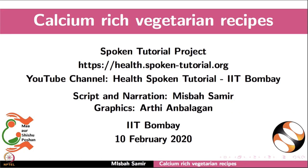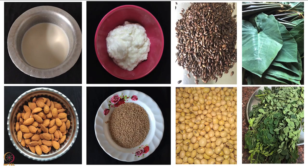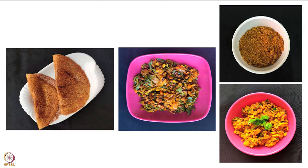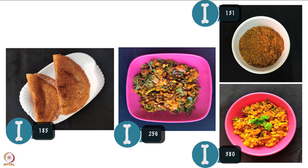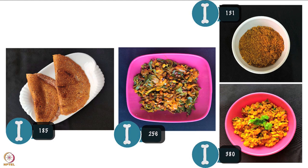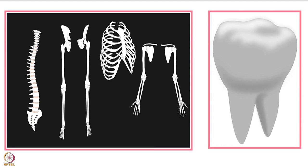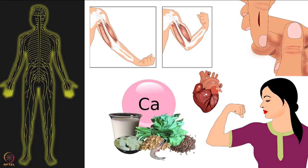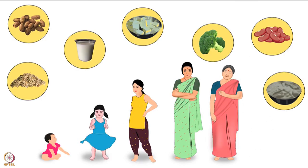Welcome to the spoken tutorial on calcium-rich vegetarian recipes. In this tutorial we will learn about food sources of calcium, cooking techniques to enhance calcium absorption, preparation of calcium-rich vegetarian recipes, and their calcium content. Dairy products are excellent sources of calcium, including milk, curd, paneer, cheese, and khoa. Calcium is also present in some nuts, seeds, legumes, and green leafy vegetables. Calcium absorption can be enhanced using soaking, sprouting, fermentation, boiling, roasting, and other cooking techniques.